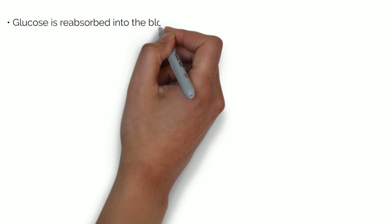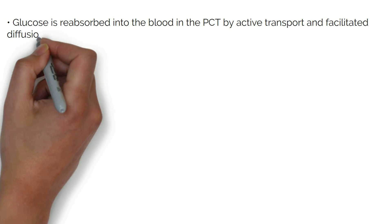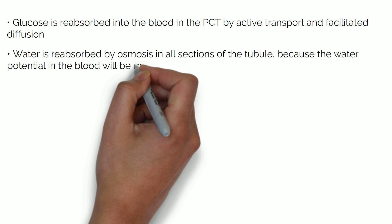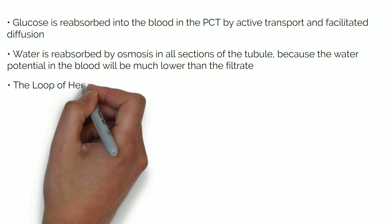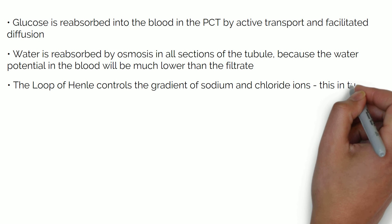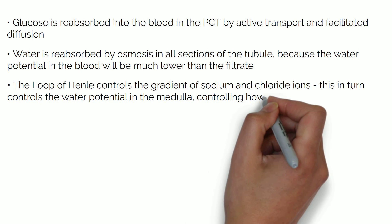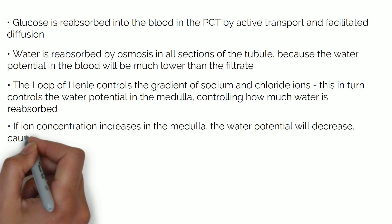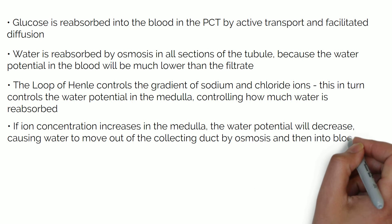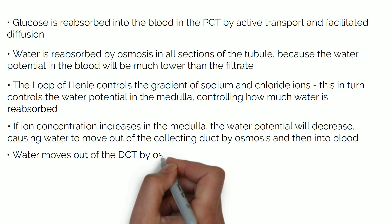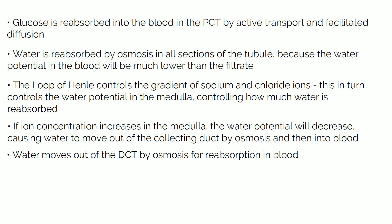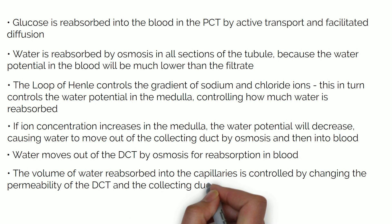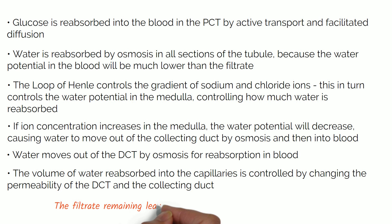Glucose is reabsorbed into the blood in the PCT by active transport and facilitated diffusion. Water is reabsorbed by osmosis in all sections of the tubule, because the water potential in the blood will be much lower than in the filtrate. The loop of Henle controls the gradient of sodium and chloride ions, which controls the water potential in the medulla, determining how much water is reabsorbed. If ion concentration increases in the medulla, water potential decreases, causing water to move out of the collecting duct by osmosis into the blood. Water also moves out of the DCT by osmosis for reabsorption, and the volume of water reabsorbed is controlled by changing the permeability of the DCT and the collecting duct.